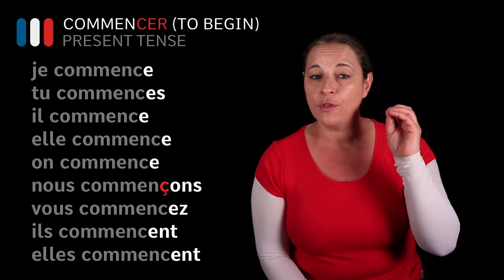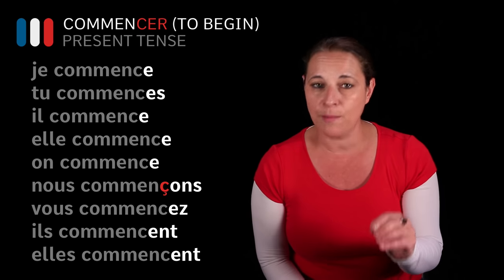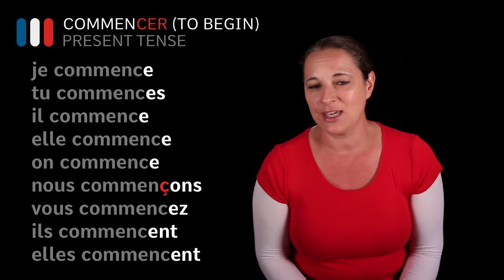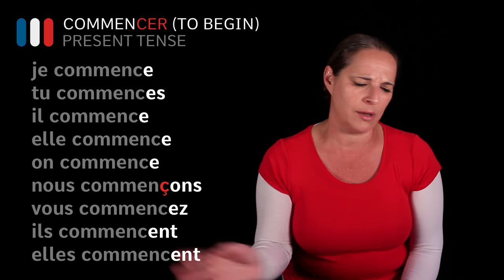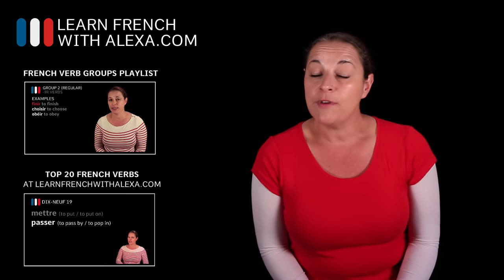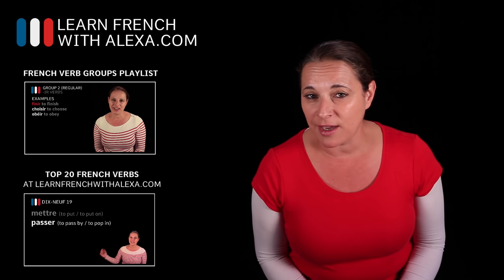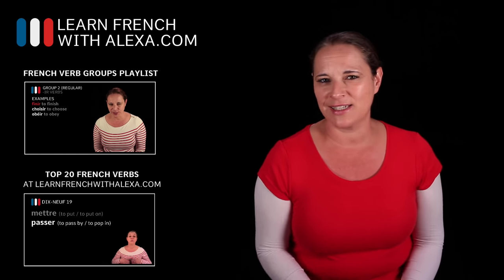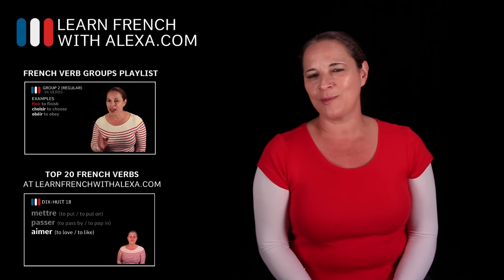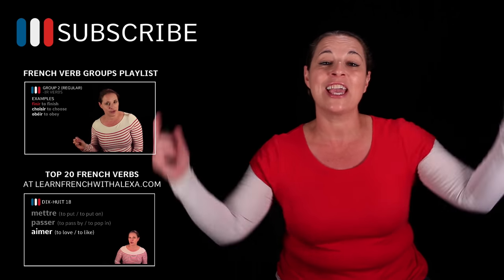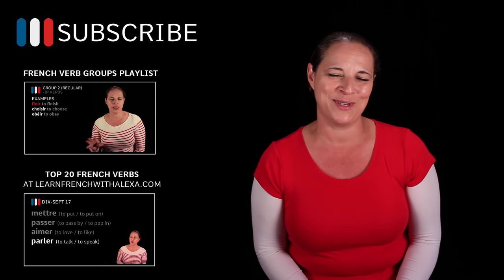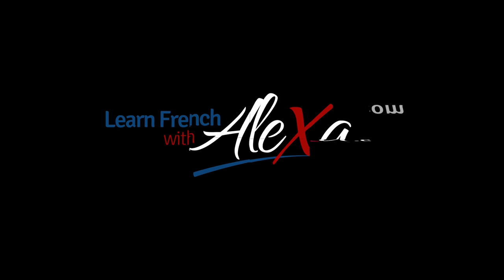That's it for the first group verb in the present tense. It's dead easy — all you need to do is drop the ER, use the stem, and add those endings. Remember that there is a support guide available to this lesson at LearnFrenchWithAlexa.com. Remember to subscribe to Learn French with Alexa on YouTube and leave a comment. I shall see you soon. Au revoir, à bientôt, bisous bisous, bye!